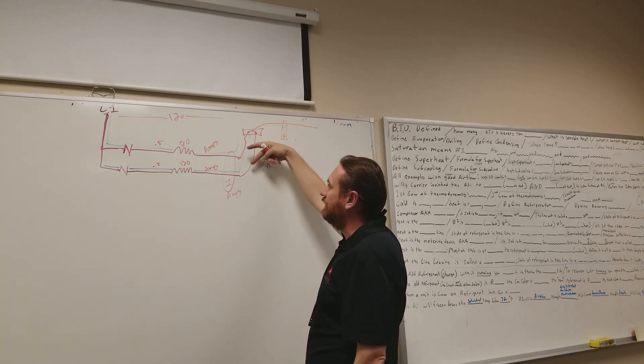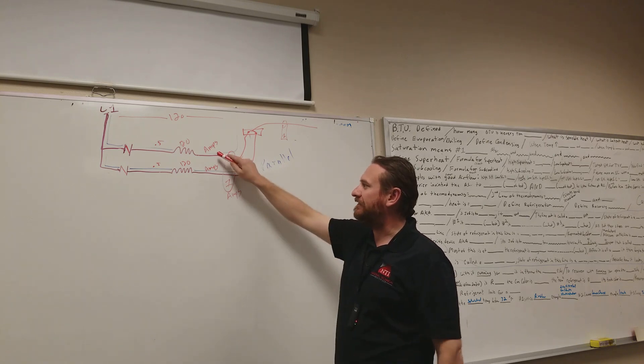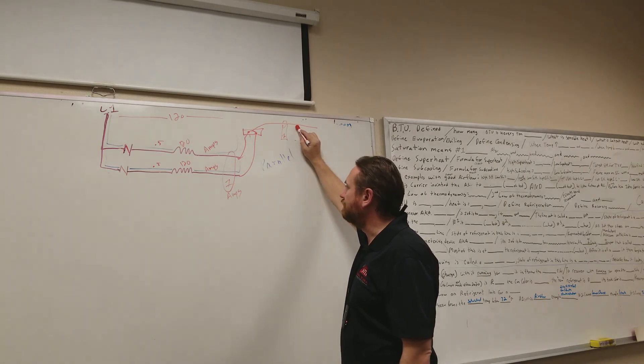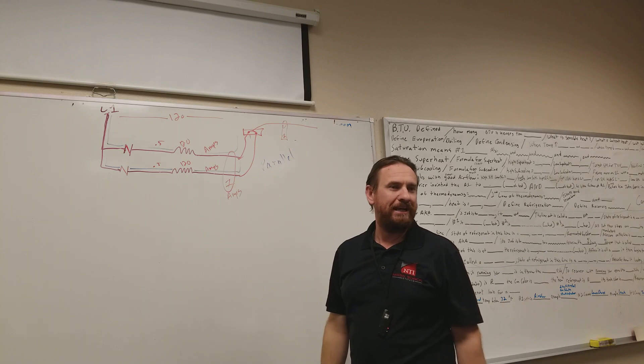One amp splits and goes to the two individual loads. The speed of electron flows a half an amp, a half an amp, but together they would be one amp. So if I clamped on just this wire, or I clamped on both of these wires together, it would still be one amp.